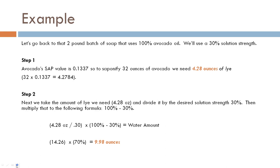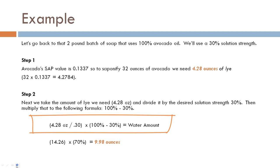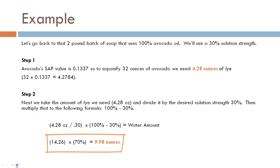Let's apply this to a 2-pound batch of 100% avocado oil using a 30% solution strength. First, calculate the lye: 32 ounces × SAP value 0.1337 = 4.28 ounces of lye. Now plug into the formula: 4.28 ÷ 0.30 = 14.26, then (100 - 30) = 70%, so 14.26 × 0.70 = 9.98 ounces of water. This recipe needs 4.28 ounces of lye and 9.98 ounces of water.